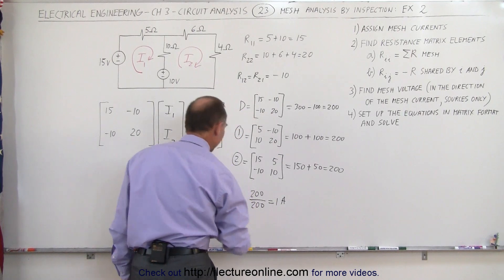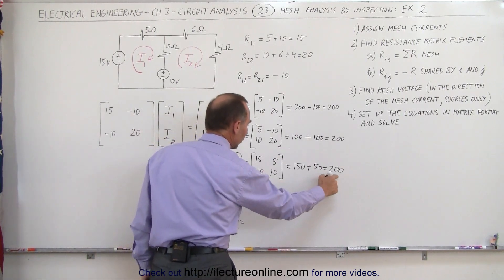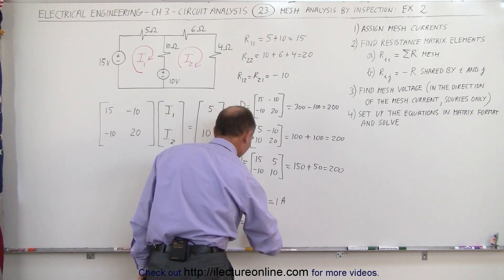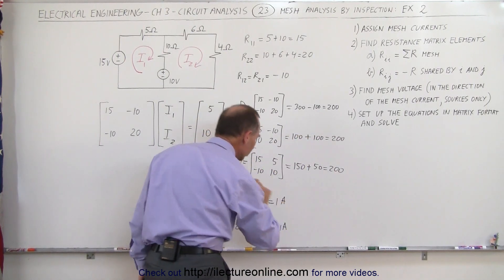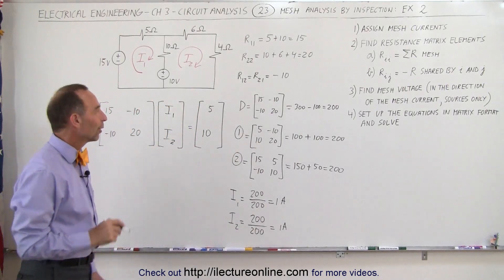You can find the second current by taking the result of the second matrix, 200, divided by the determinant matrix, 200, which is also 1 amp. So both I1 and I2 are 1 amp.